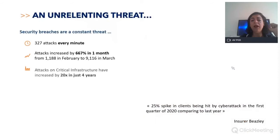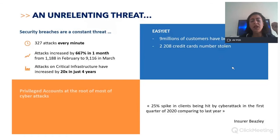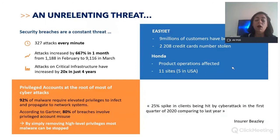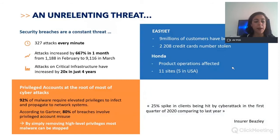I'll add also that more than 70% of cyber crimes come from the inside of the company. I guess all of you heard about EasyJet and Honda, who were targeted during this crisis — just look at the figures, they speak for themselves. The insurer Grizzly noticed more than a 25% spike in clients being hit by cyber attacks in the first quarter of 2020 compared to last year — a huge spike.